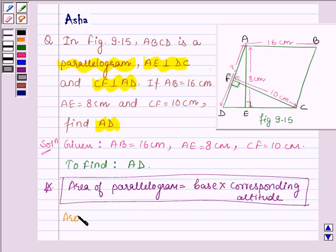The area of parallelogram ABCD is equal to, if the base is AB then the corresponding altitude is AE.